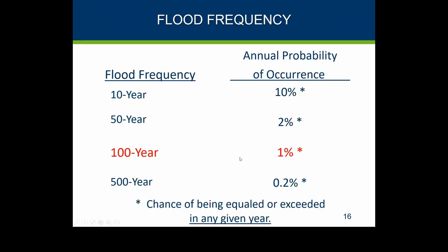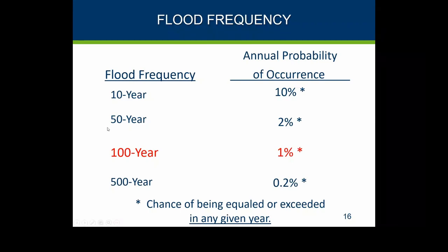When more detailed FEMA map studies are done, they also calculate the 10-year (10% annual chance) and 50-year (2% annual chance) floods, not just the 500-year. In areas with more detailed information, that additional data is available. We won't get into how to find that today, but we cover it in our map basics and other sessions.